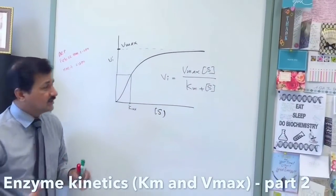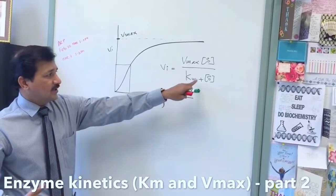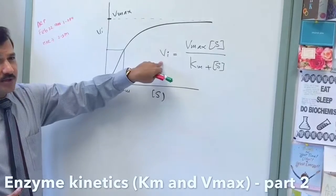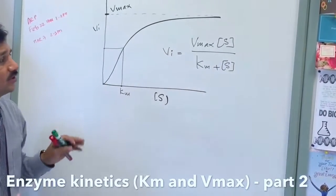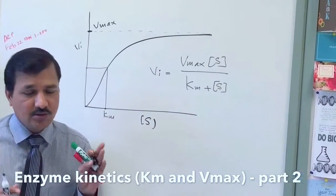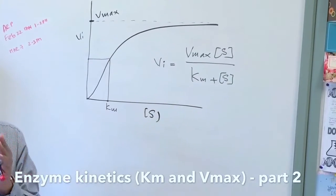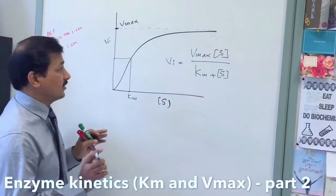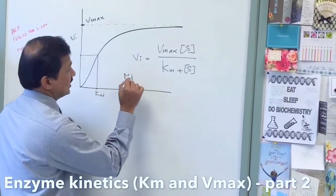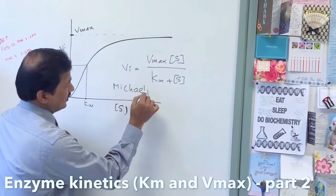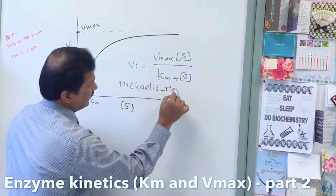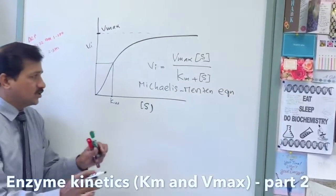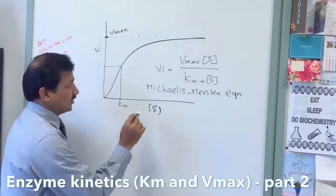This equation can be used to calculate Km, substrate concentration, or initial velocity for a given enzyme. It also applies to membrane transporters, since transporters follow Michaelis-Menten kinetics as well. This is the Michaelis-Menten equation — let's now solve a problem with it.